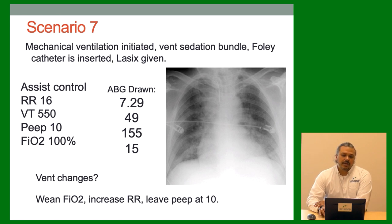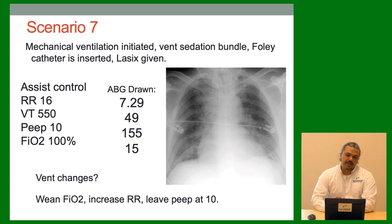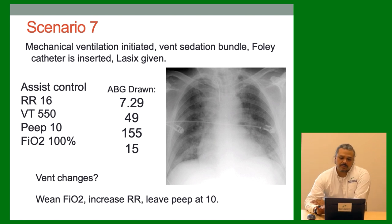Assist control: rate 16, tidal volume 550, PEEP 10, FiO2 100%. ABG drawn: 7.29 / 49 / 155 — looks like we're going in the right direction. X-ray looks a little better. Vent changes: wean FiO2 because we don't want SPO2 above 100. We're going to keep the PEEP at 10 — not just to oxygenate, but to help push that fluid out because there's a lot of fluid on board. We may leave the respiratory rate alone — CO2 is a little high but he may start to over-breathe and move that on his own.